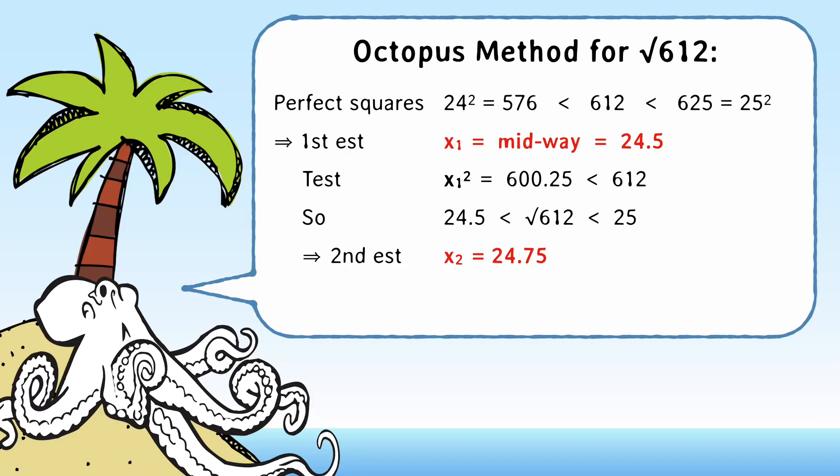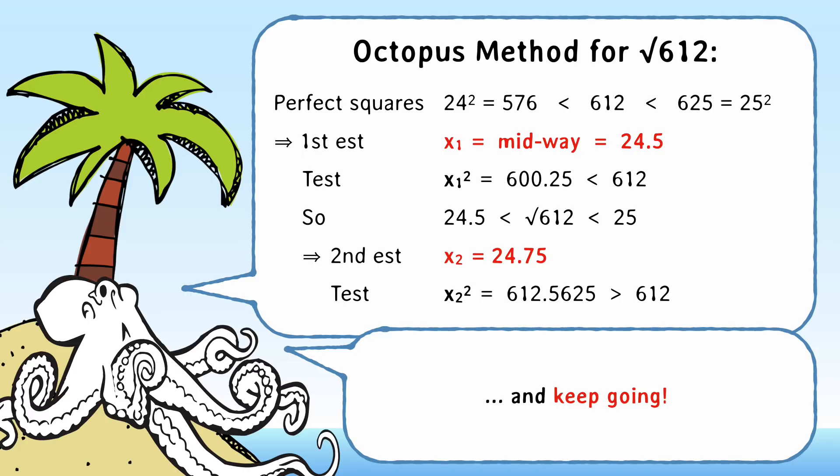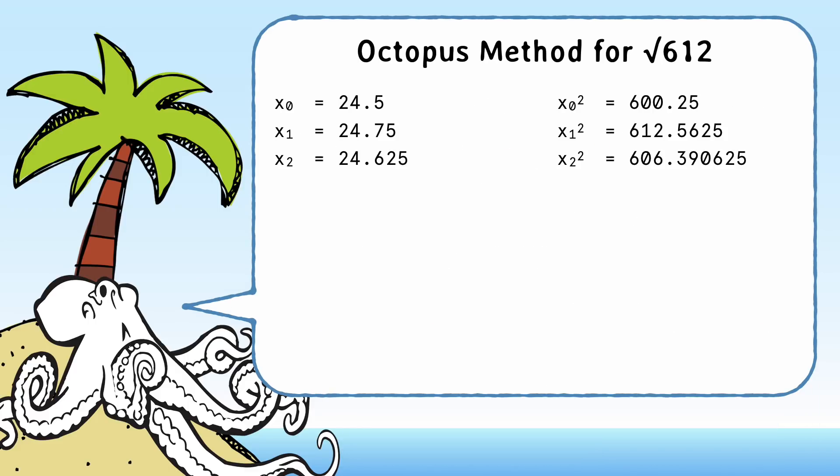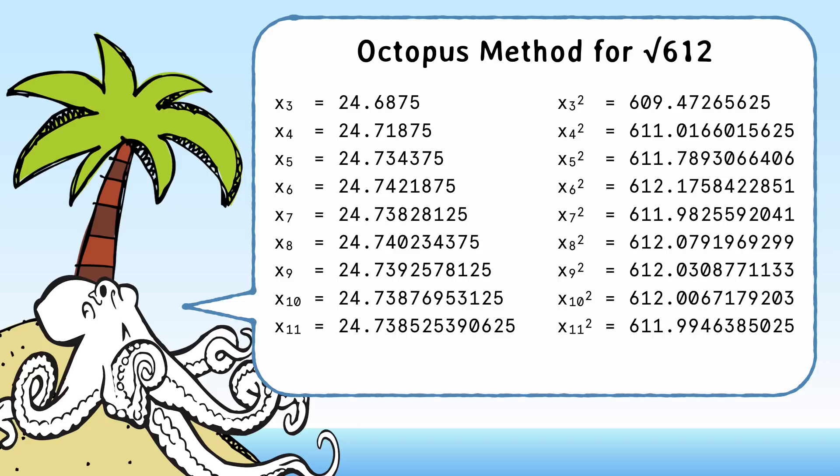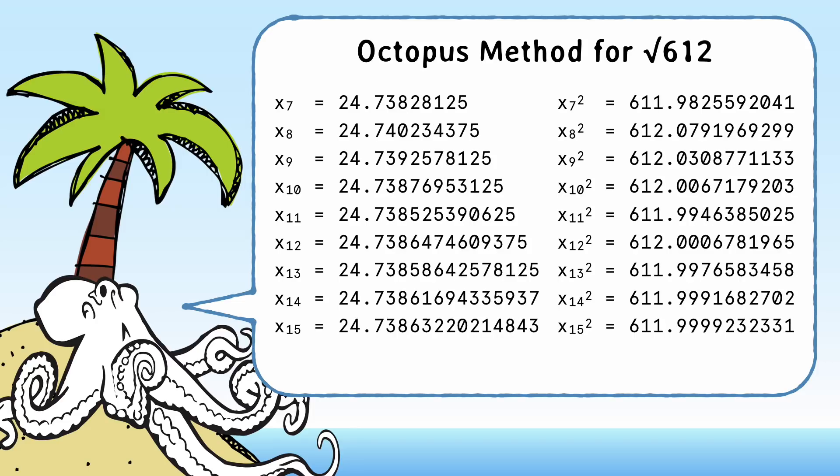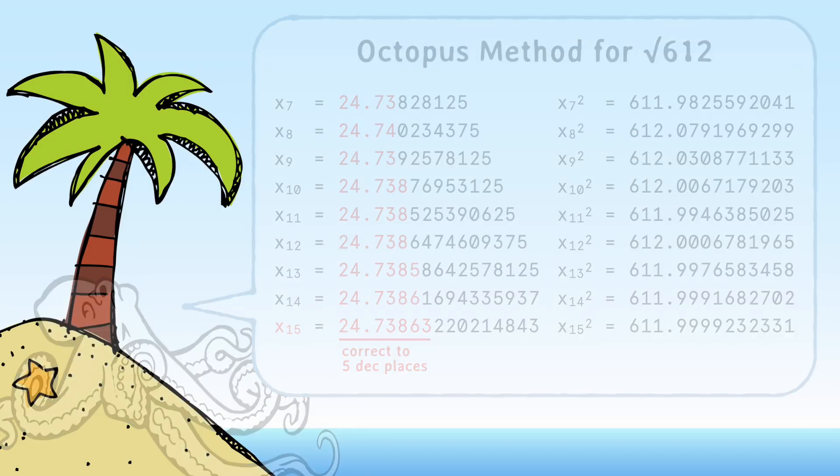So the octopus knows that the answer must be between 24.5 and 25. Split that difference, and the new estimate is 24.75. The square of that is 612.5625. And the octopus keeps going and going and going. The problem is that while the octopus's method does work, it's pretty slow to converge. It takes around 15 iterations to get five decimal places of precision. If only there was a quicker way.